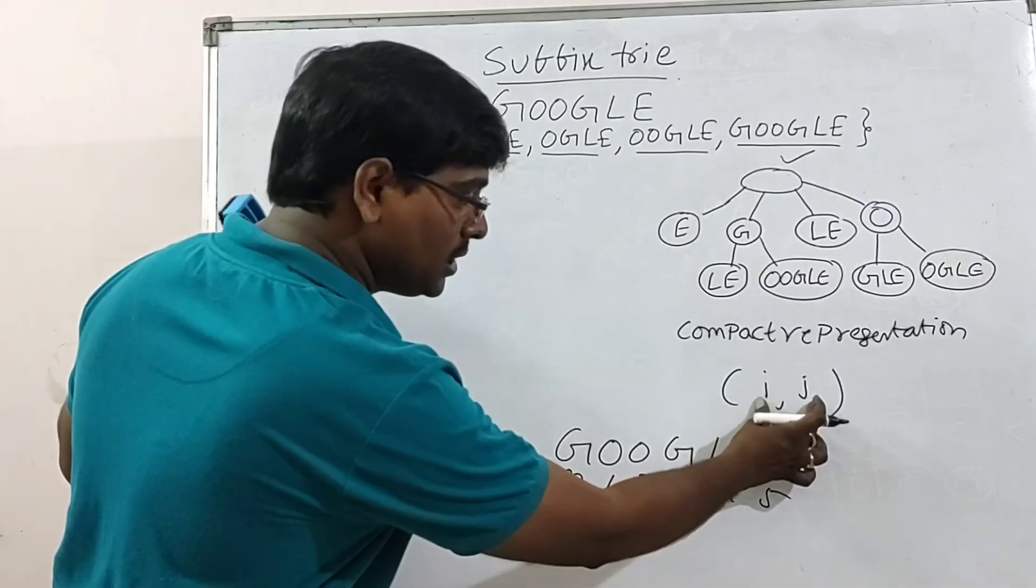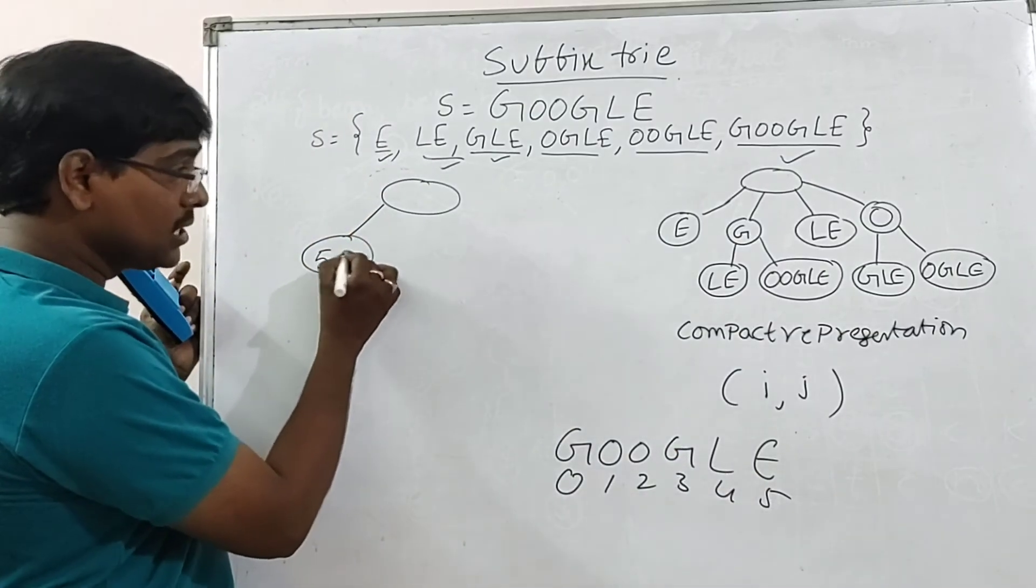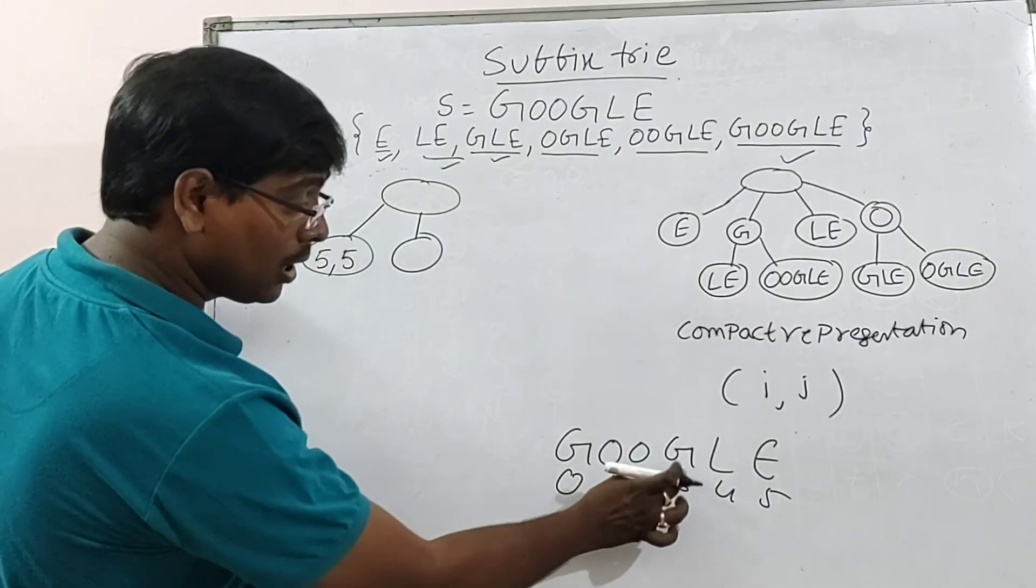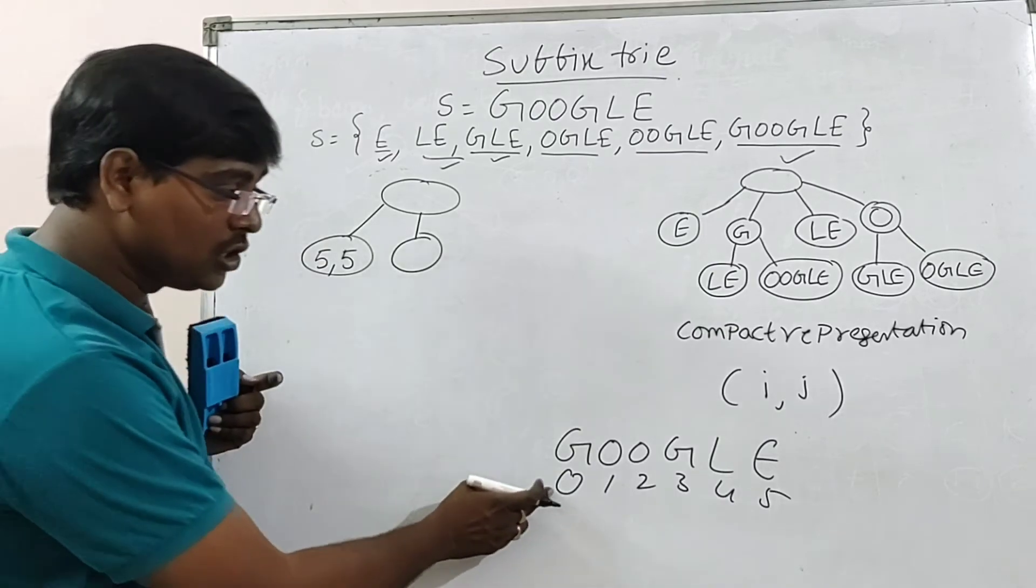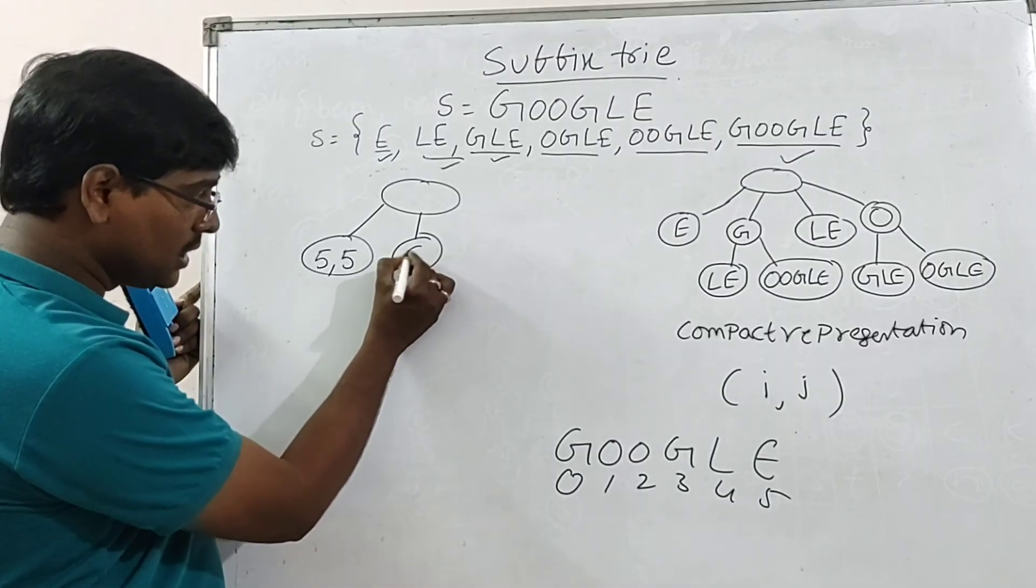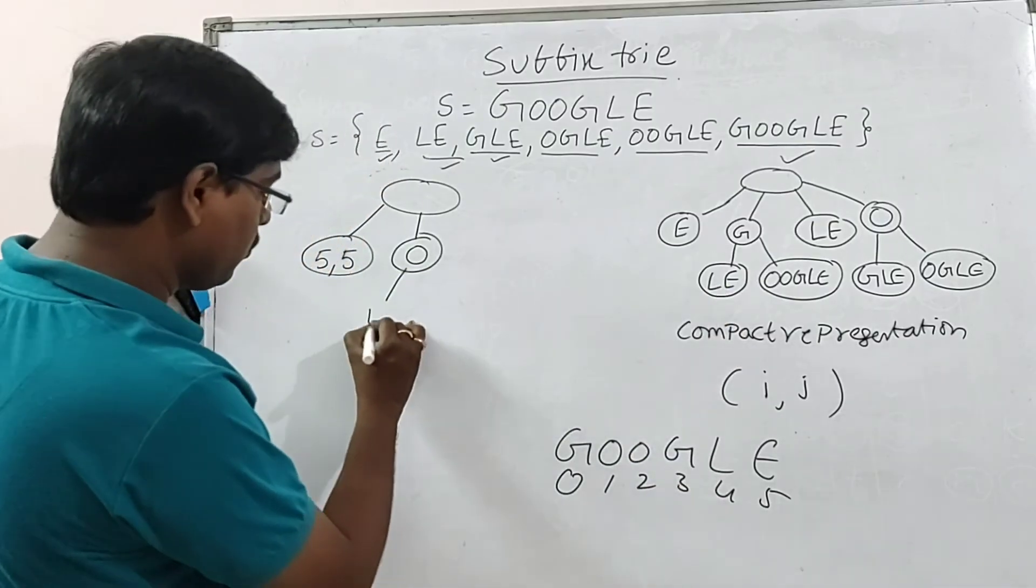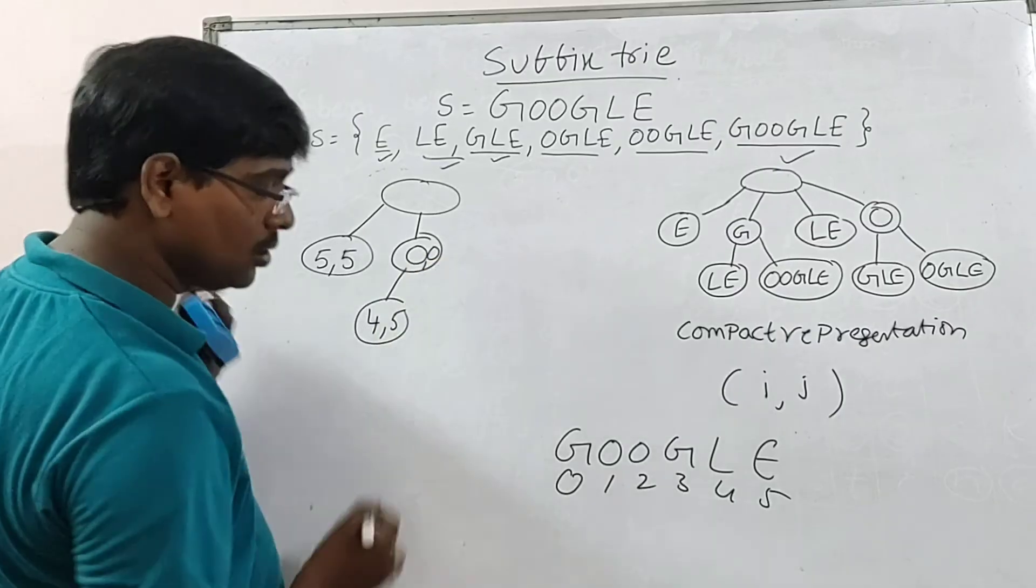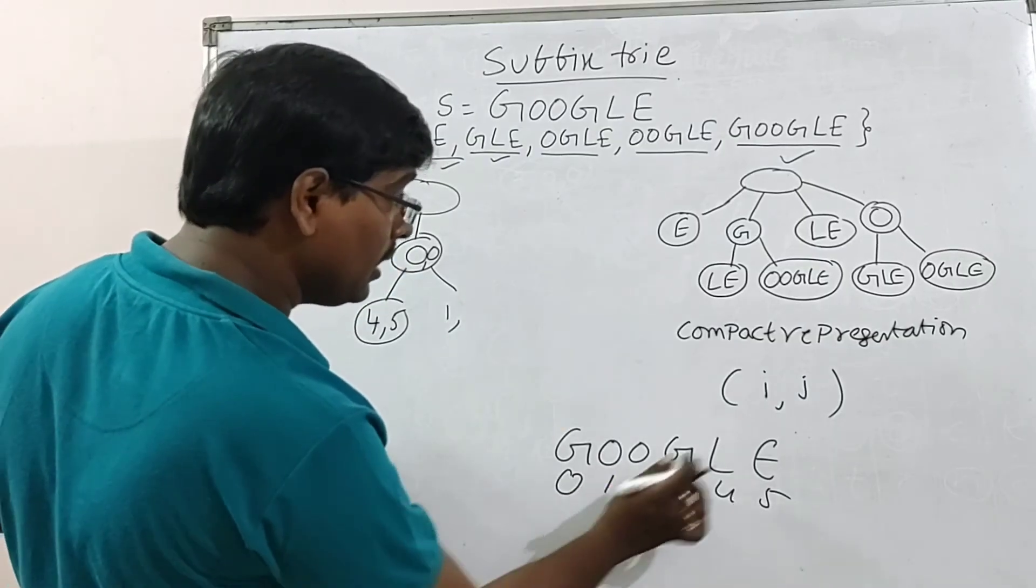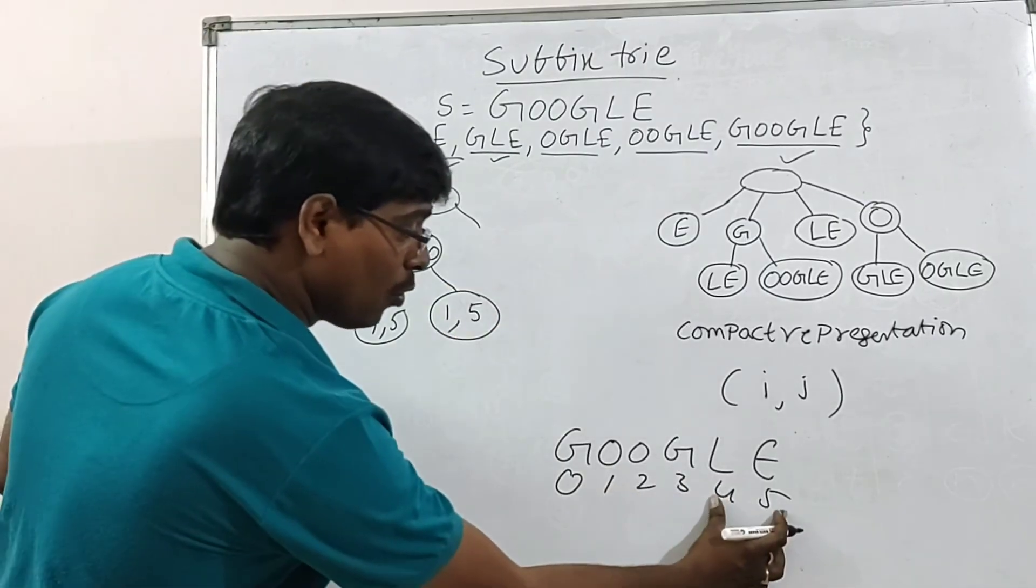Now, write down the compact representation. E. I, J means starting index, ending index. E starting index is 5, ending index is also 5. Now, G. G starting index is 0 or 3. Which one you will consider? 0 is available, 3 is also available. Take the starting one. 0, 0. Now, L-E. L-E specify 4, 5. Here also, 0, 0, 4, 5. Here, O-O-G-L-E. O starting letter is 1. E ending is 5. Now, L-E, 4, 5. Next O, 1, 1.